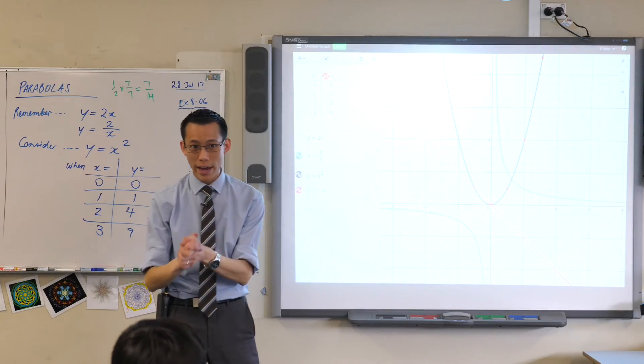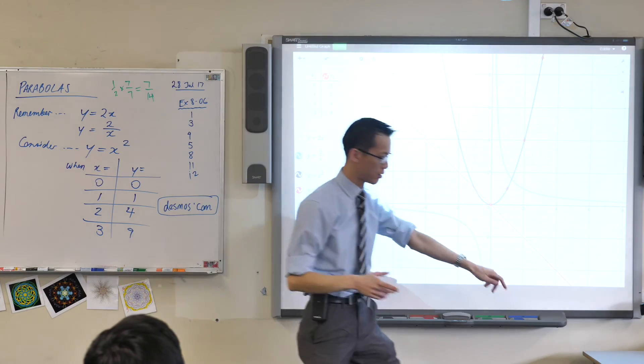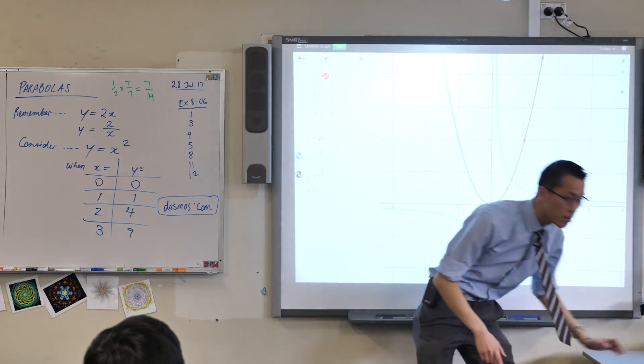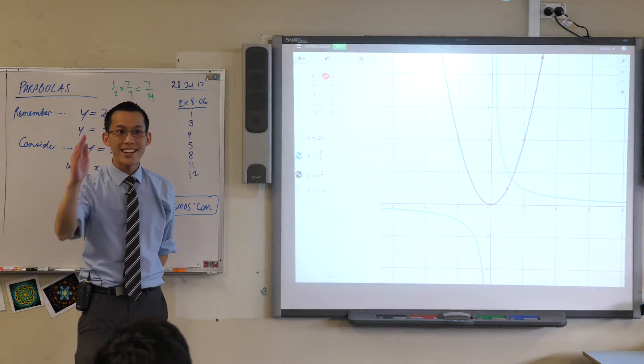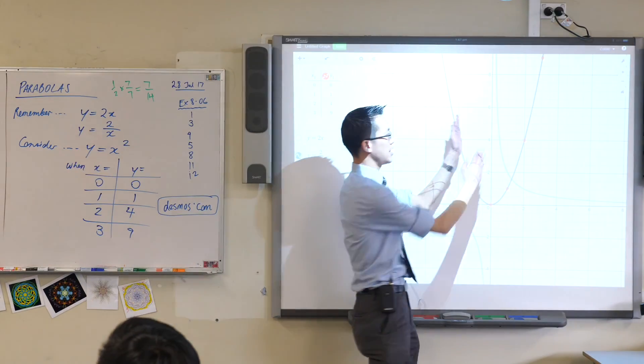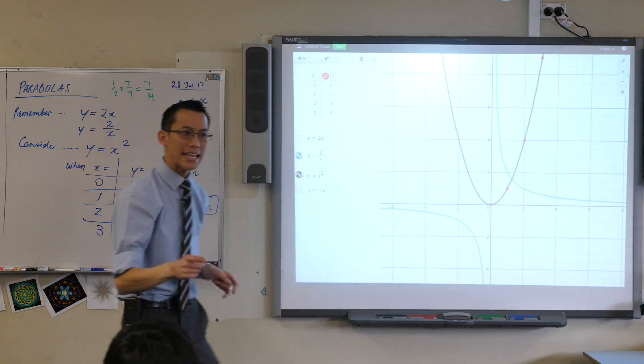Now, the y equals x squared line isn't symmetrical around this line. It's symmetrical around another line. What line is it? I'll give you a tip. The line's already on there. Isn't it? Yeah, very good. It's the y axis. You can see, you just sort of flip this side over here. Now, think about that for a second. Why is that?